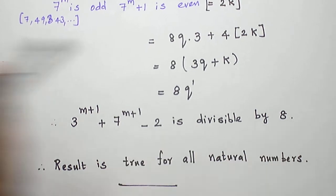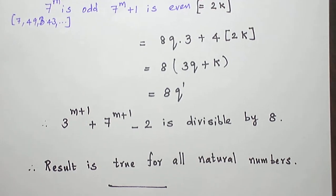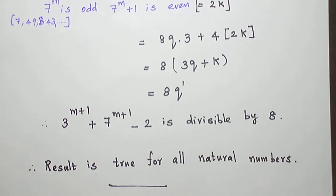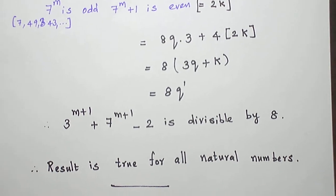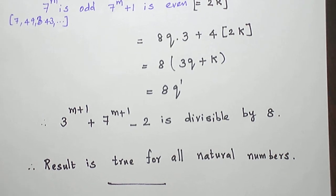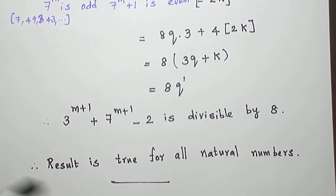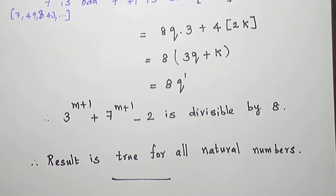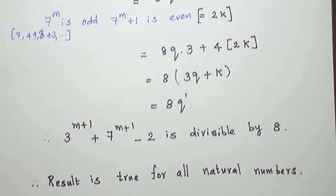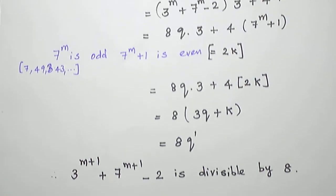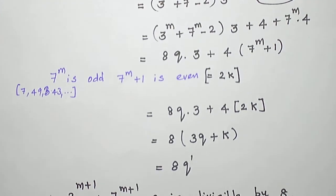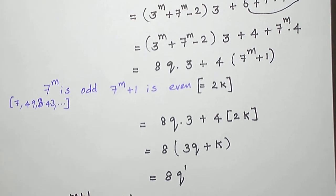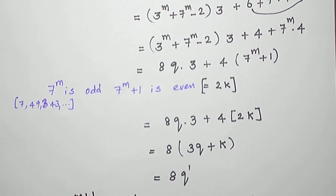So we proved the result for the next number n is equal to m plus 1. By the principle of mathematical induction, this result is true for all natural numbers. With this, the proof is over. Let us see another problem in the next video. Thank you.